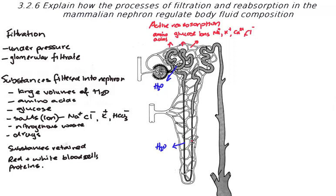In the ascending arm of the loop of Henle, however, it is highly impermeable to water but very permeable to the movement of salt, so sodium ions are actively moved out of the ascending arm. Importantly, the loop of Henle is longer in organisms that produce more concentrated urine, because more water is absorbed. Organisms that need to retain as much water as possible have a much larger loop of Henle, while those with plenty of water available have a shorter loop.